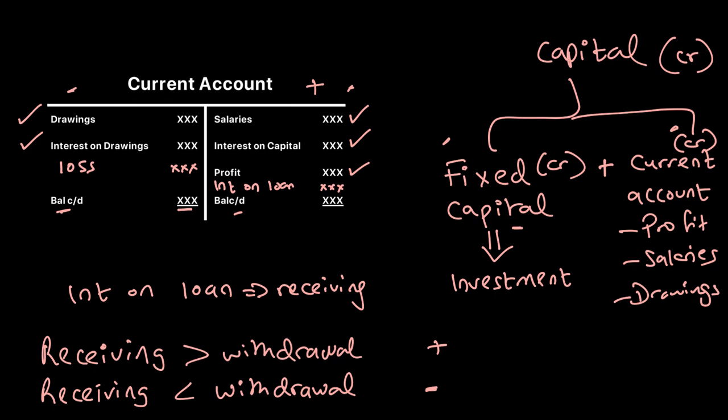In the next video we will start solving questions where we draw an appropriation account and a current account to understand how they are drawn and how they impact the partnership statement of financial position.